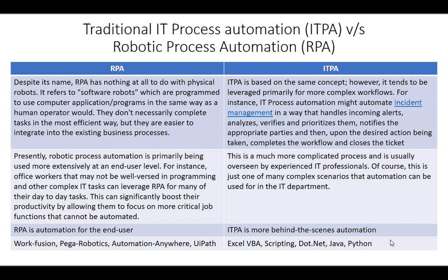Examples of RPA tools are WorkFusion, which is a Java-based application, and Pega, Automation Anywhere, and UiPath, which are built on .NET. Basically, all these tools are built on top of IT automation but are wrapped up to enable end users who don't have extensive technical knowledge to automate their day-to-day tasks.